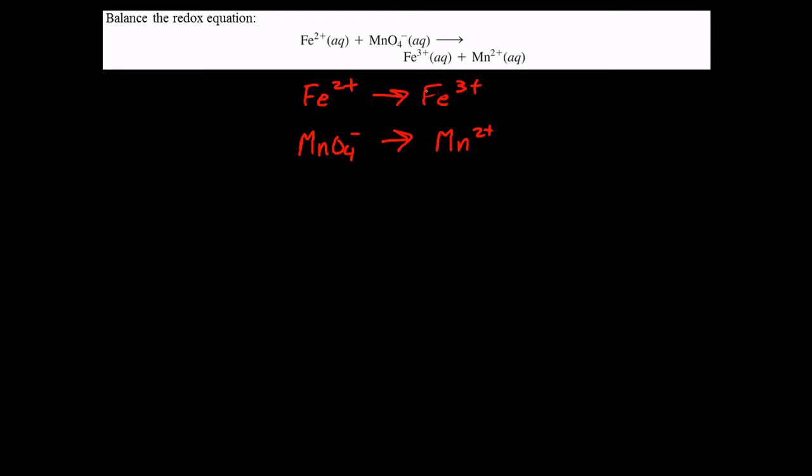Just the charge. We have plus three on the right, plus two on the left. The only way to balance that is by adding one electron on the right to get both of them down to plus two.